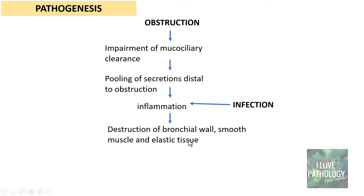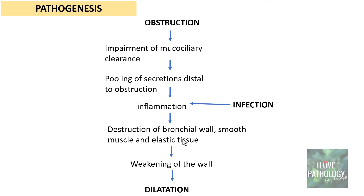Once the elastic tissue is destroyed, there is weakening of the walls of the bronchi and bronchioles, and that causes dilatation. The pathogenetic mechanism is simple: obstruction and/or infection leads to inflammation, destruction of the bronchial wall, weakening, and then dilatation of the bronchi and bronchioles.